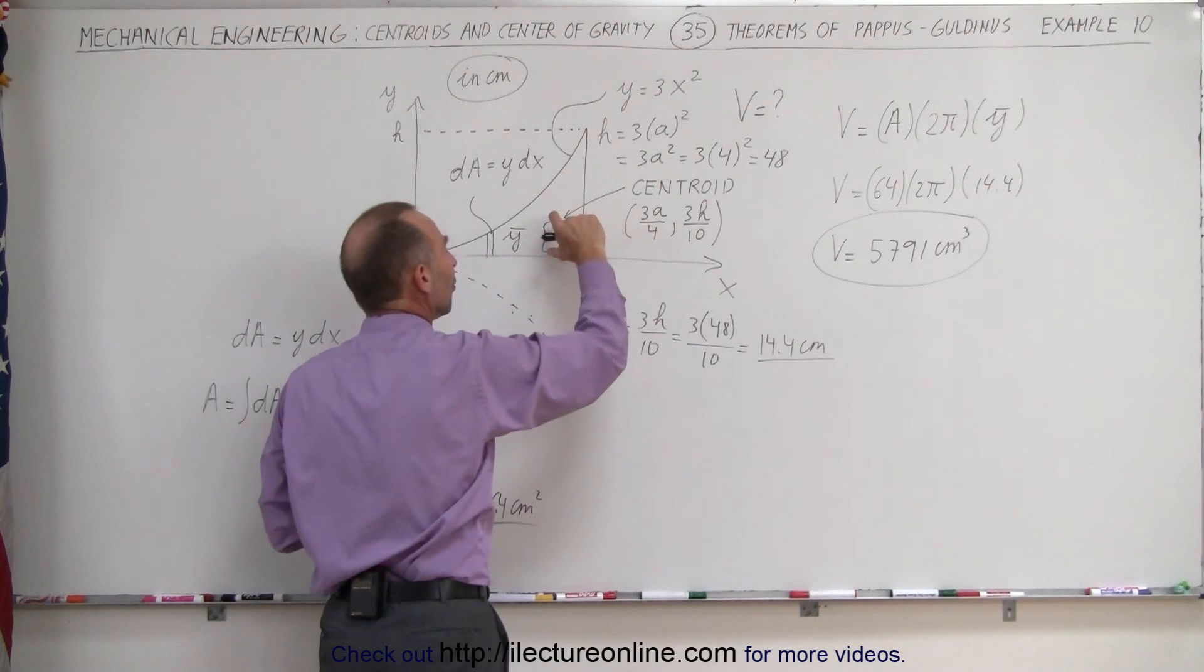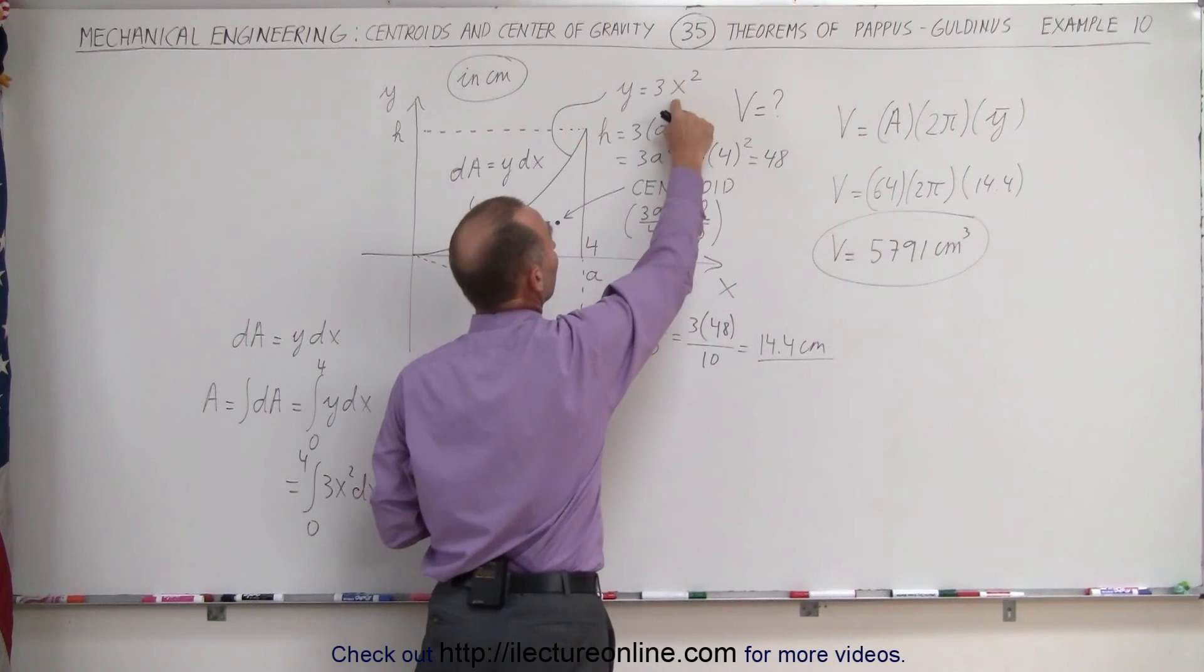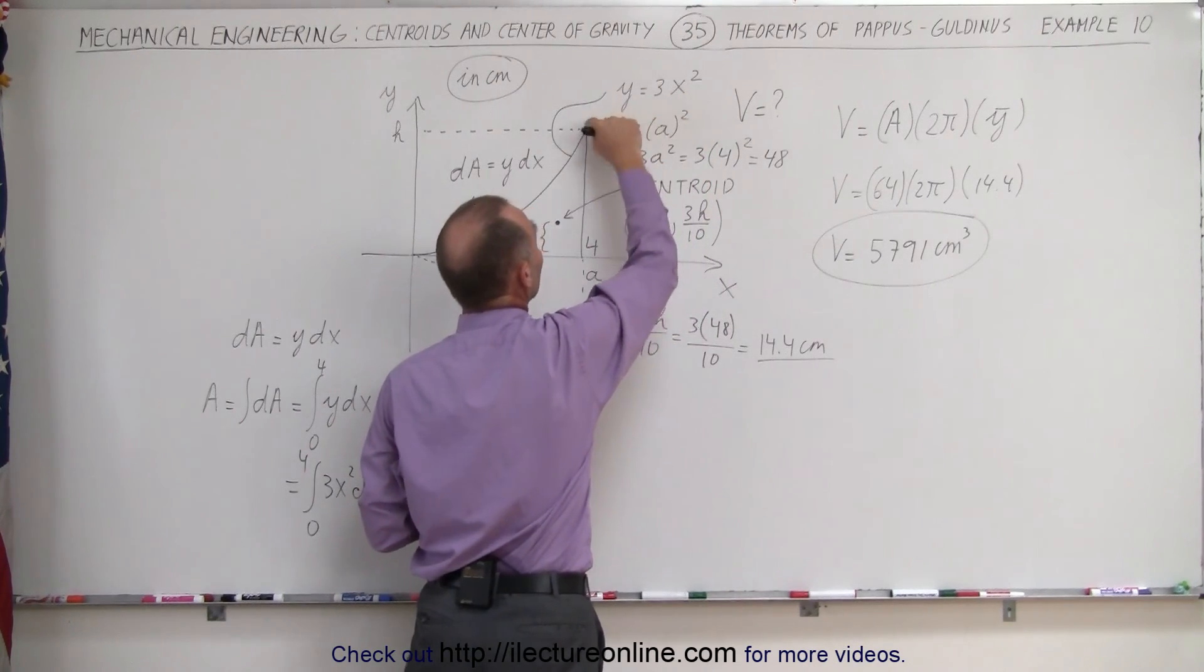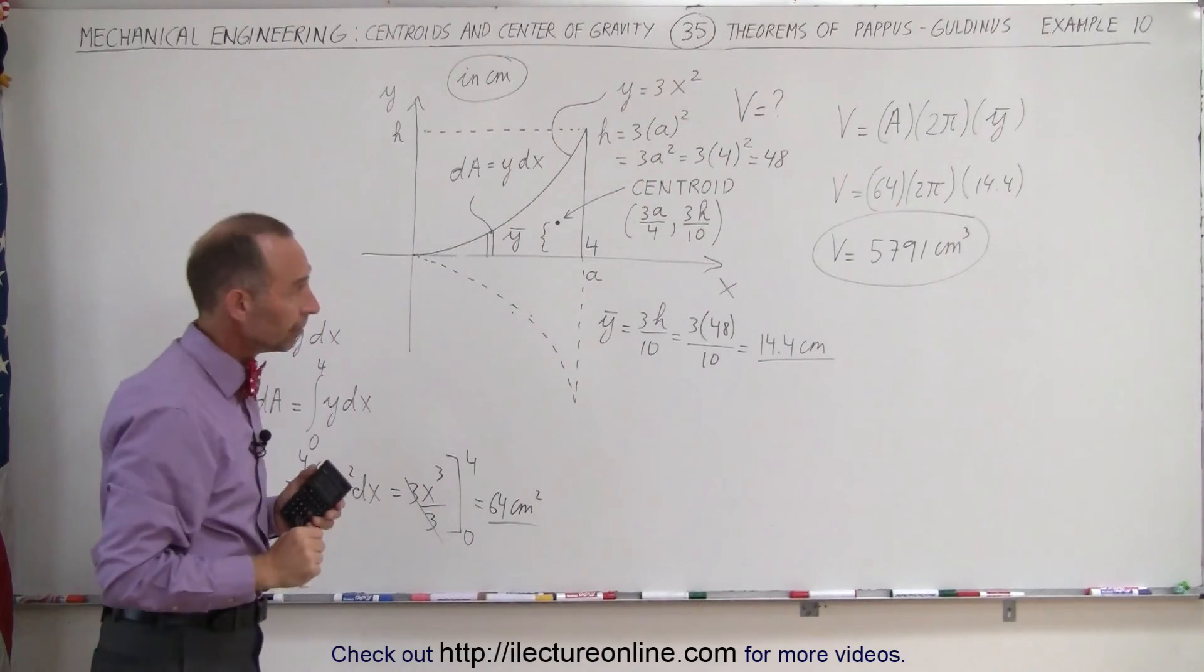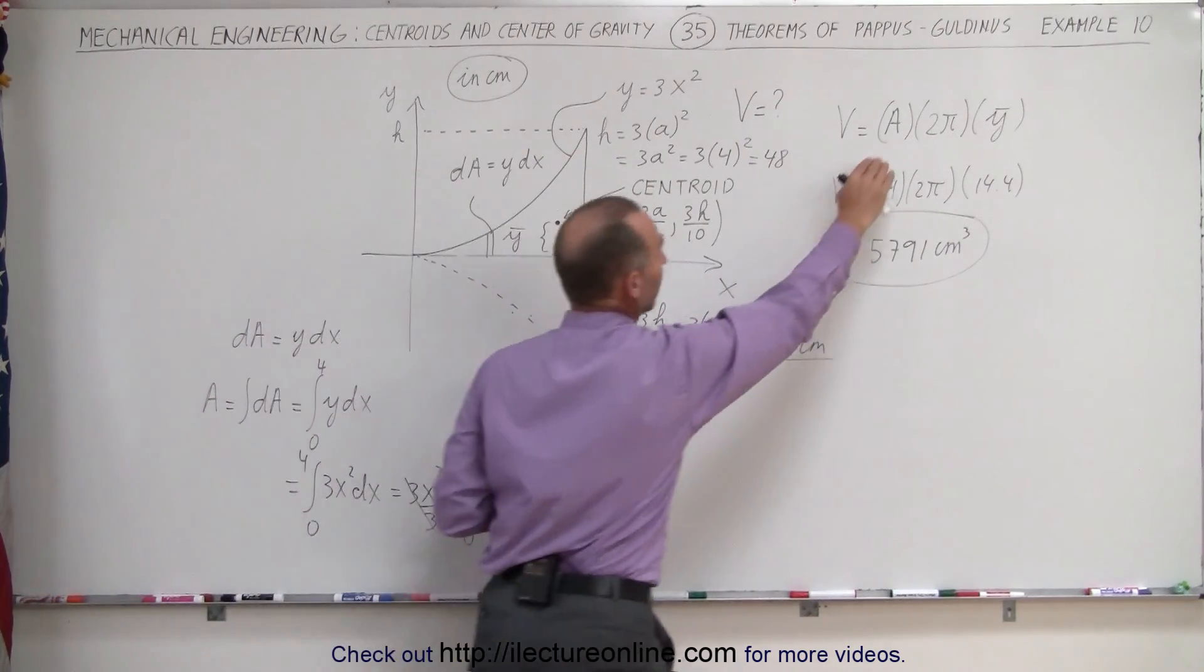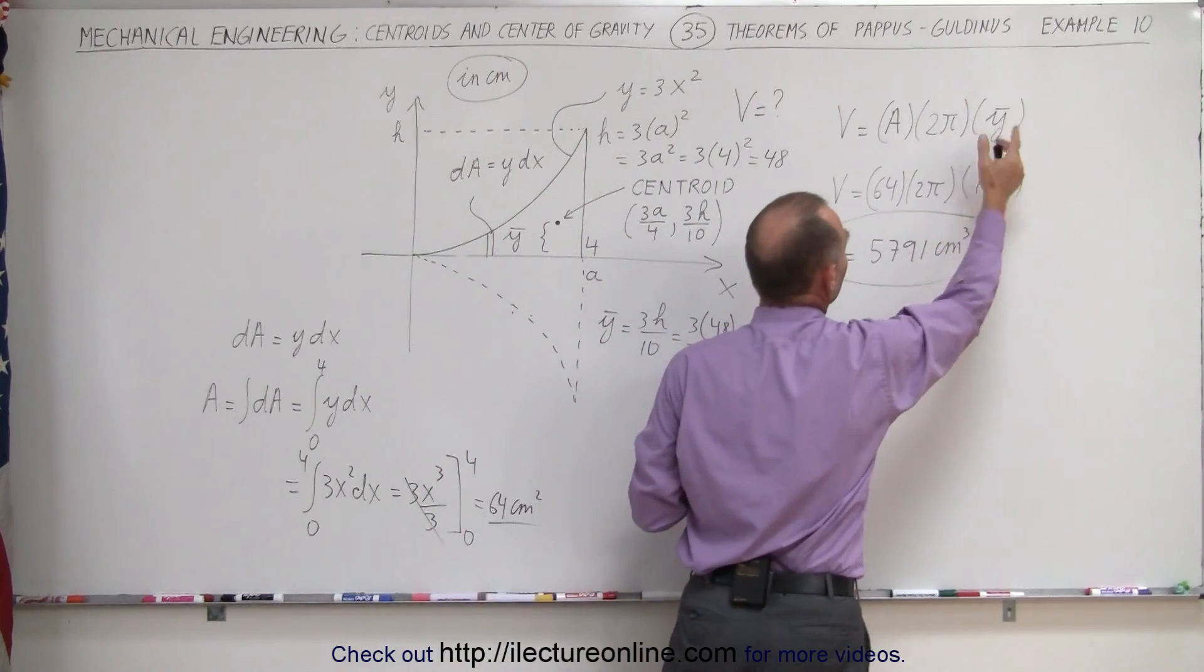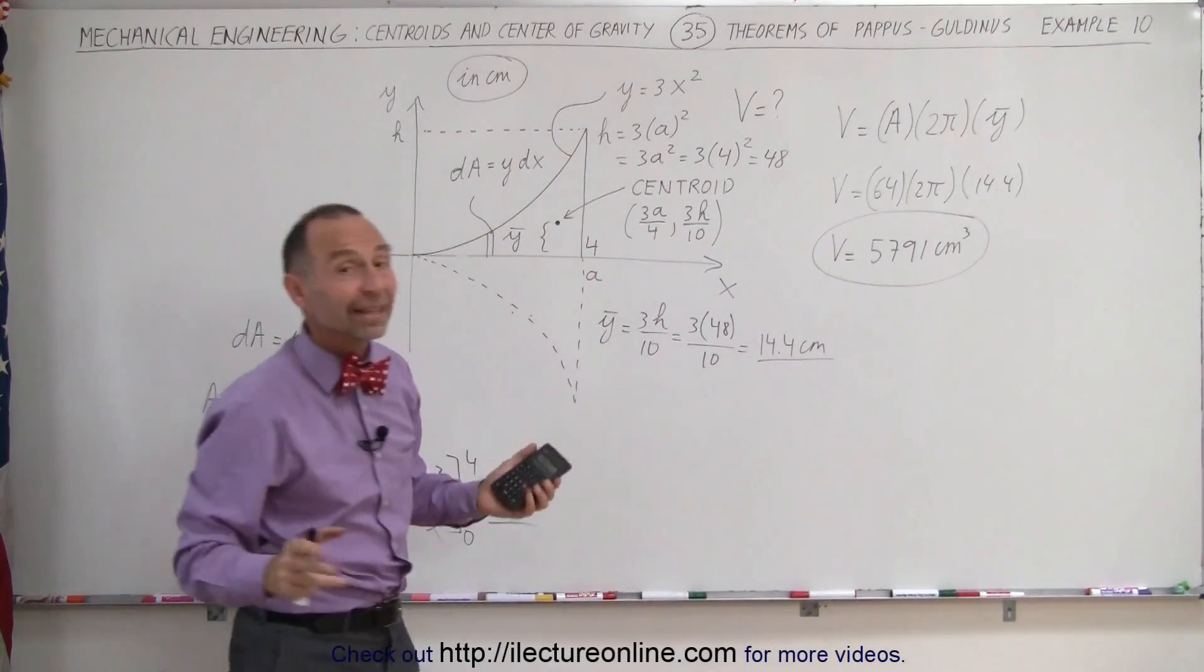Oh, I'm sorry. That's the y-coordinate of the centroid. h can be found by taking this distance here which can be calculated using the equation. Plugging a in here that gives you h. Finally, we then realize that if we have area which we plug in here and we have the y-coordinate of the centroid which we can plug in here, then we can simply find the volume using that technique.